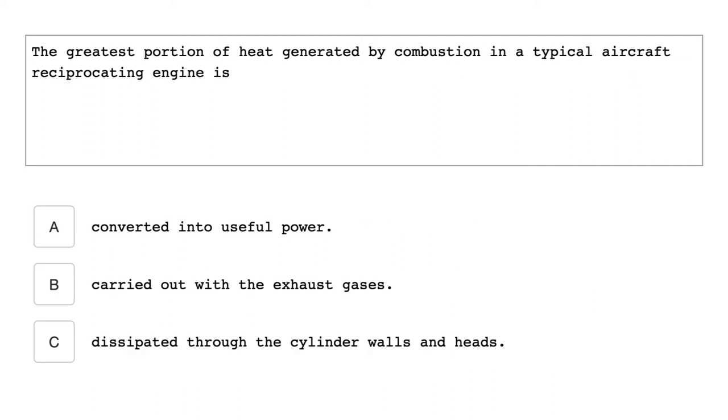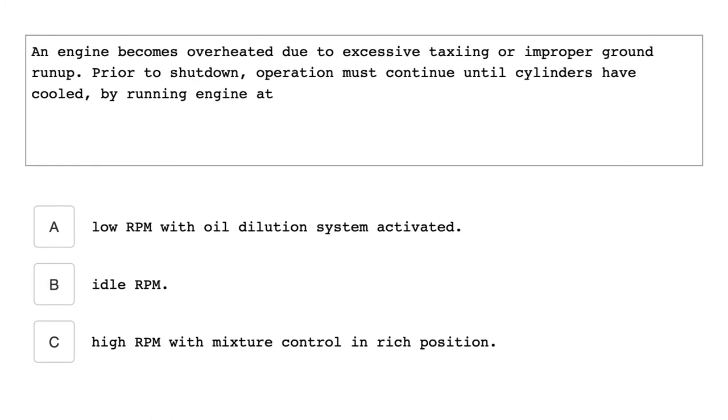The greatest portion of heat generated by combustion in a typical aircraft reciprocating engine is carried out with the exhaust gases. An engine becomes overheated due to excessive taxiing or improper ground run-ups. Prior to shutdown, operation must continue until the cylinders have cooled by running the engine at idle rpm.